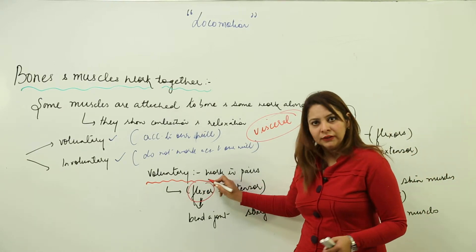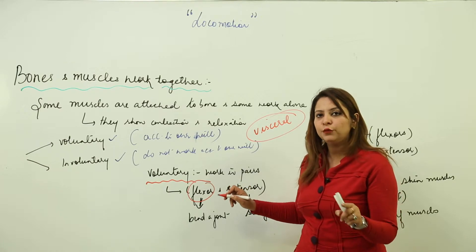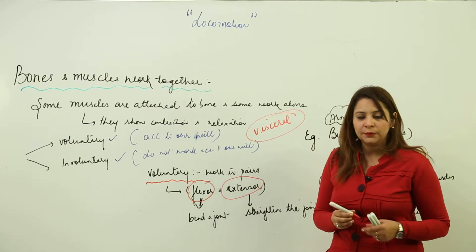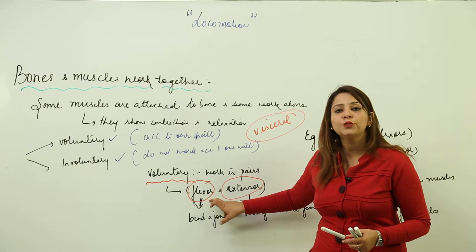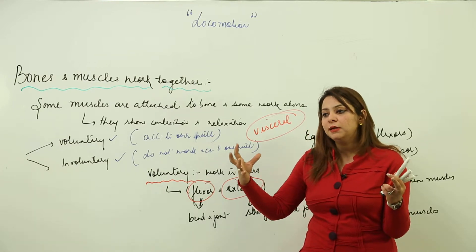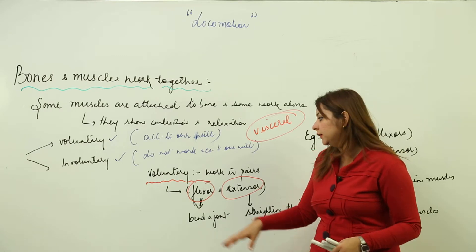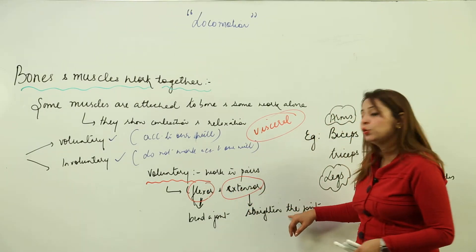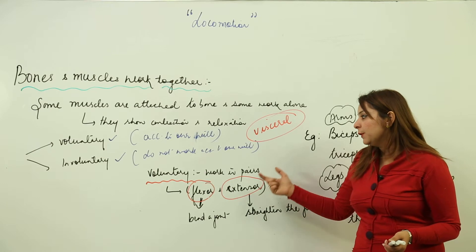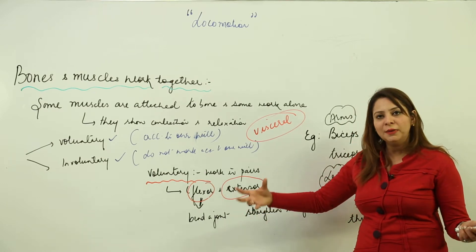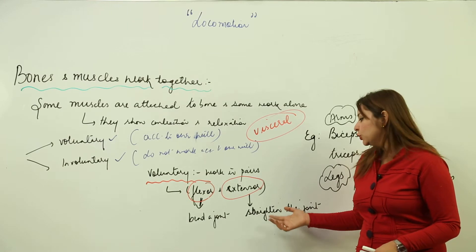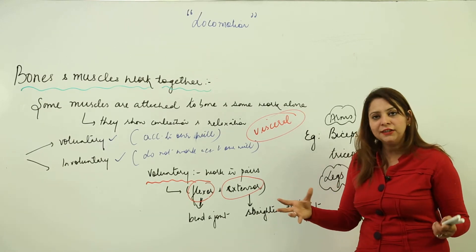The two types of muscles in a voluntary muscle pair are the flexor and the extensor. Flexor muscles are used to bend a joint — they bring the muscles closer to each other. Extensor muscles, as the name suggests, are used to extend or straighten a joint — they move the muscles away from each other.